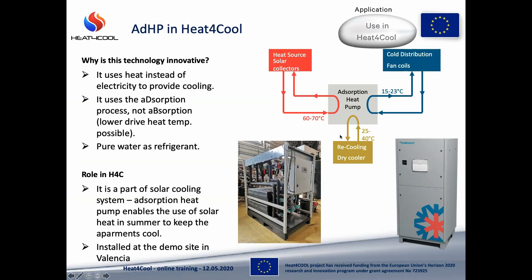Now when you know what the adsorption heat pump is and how it works, I can explain our role in the Heat for Cool project. This technology is innovative and worth greater development — that's why we need funded projects to make it happen. It uses heat instead of electricity to provide cooling, it uses the adsorption process which is less popular than absorption but allows the use of lower drive heat temperatures, making it perfectly suitable for flat solar collectors and solar cooling. Moreover, the refrigerant is pure water, which is safe for people and the environment. In the Heat for Cool project we have developed a prototype of a new solar-assisted adsorption heat pump.